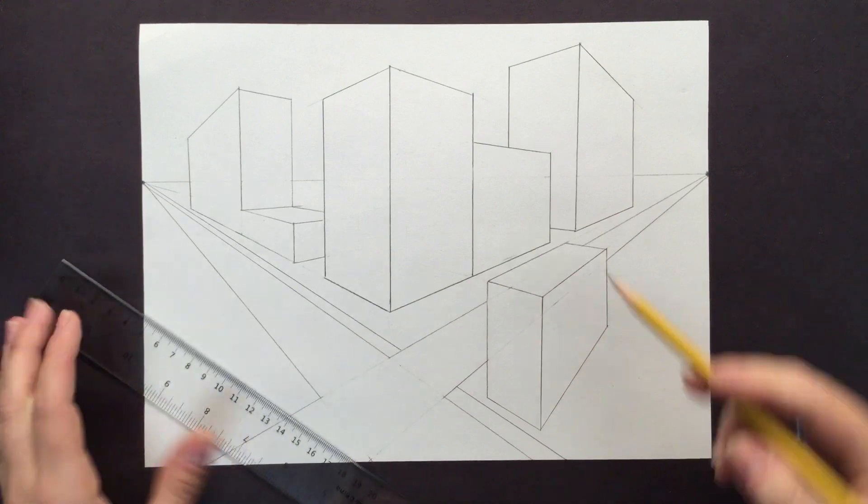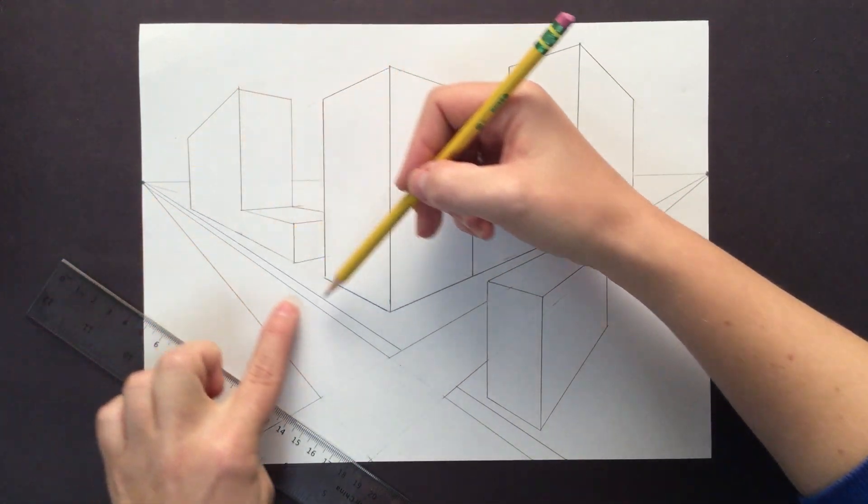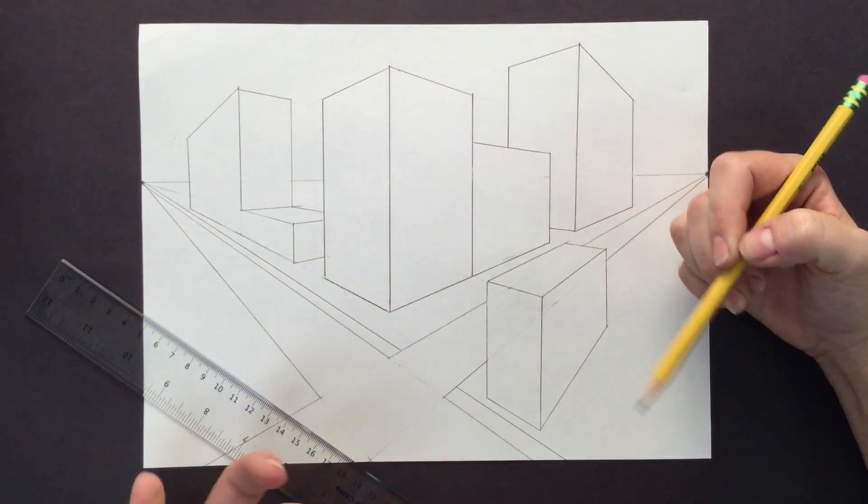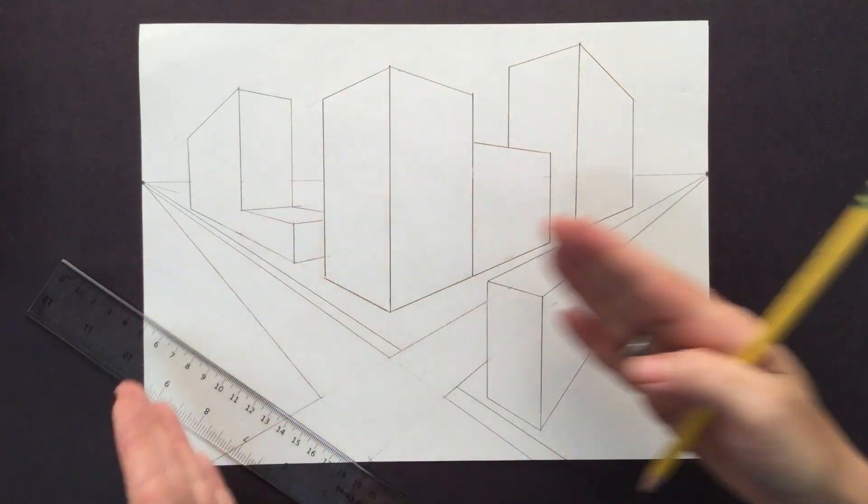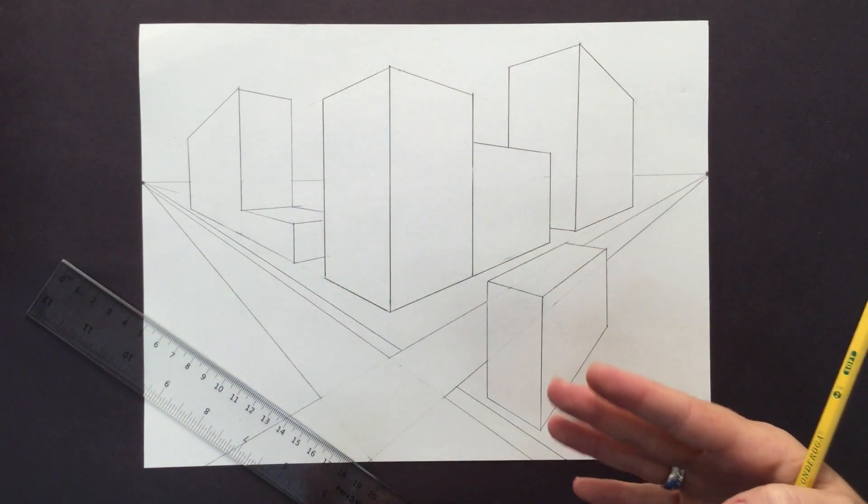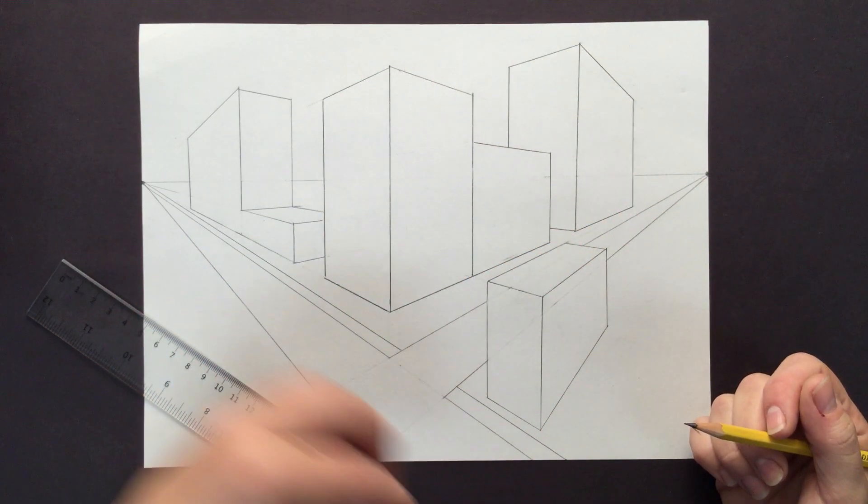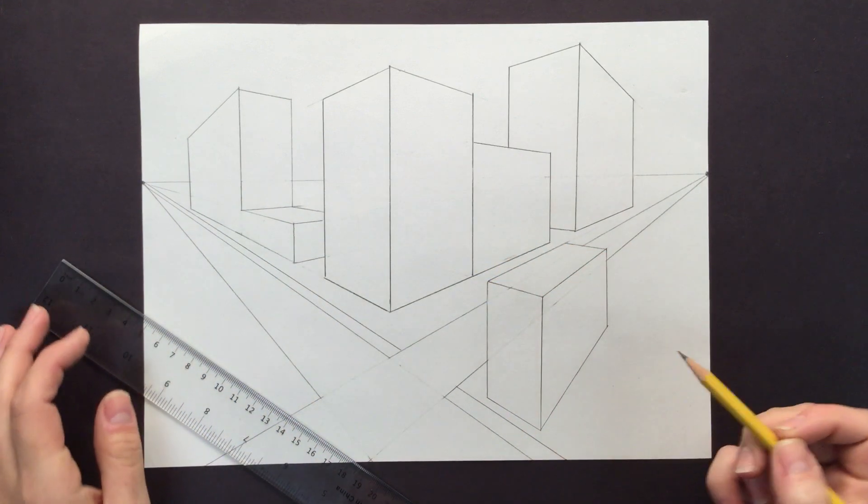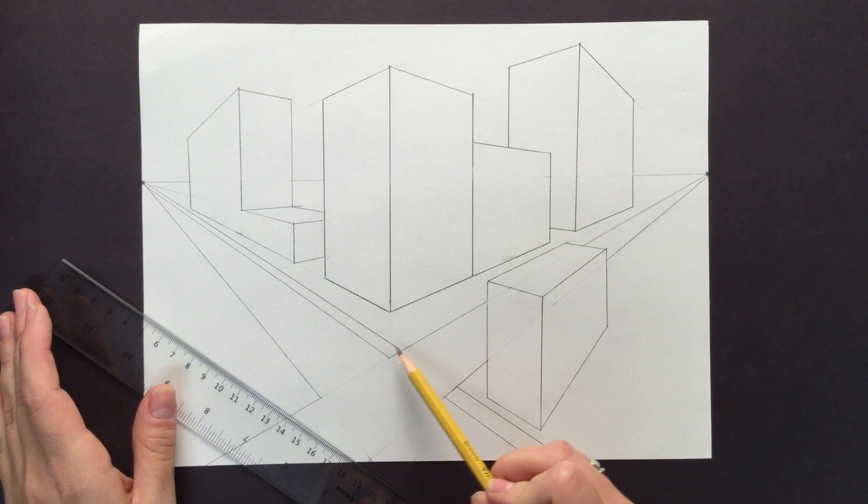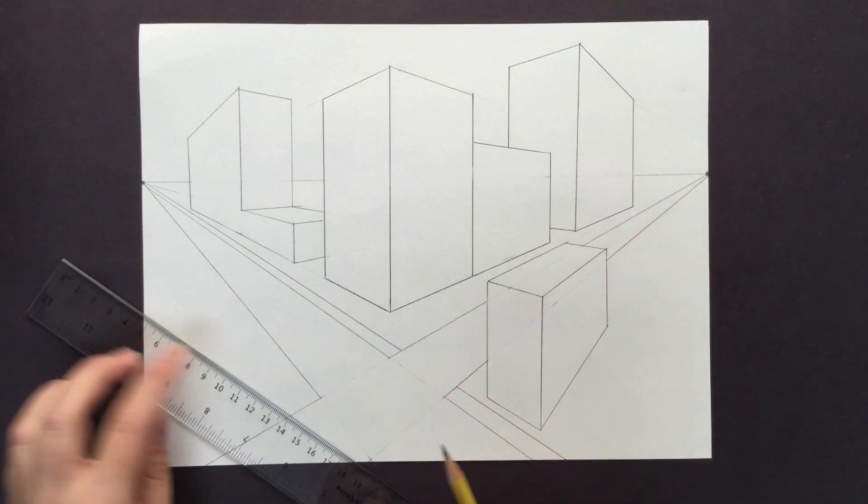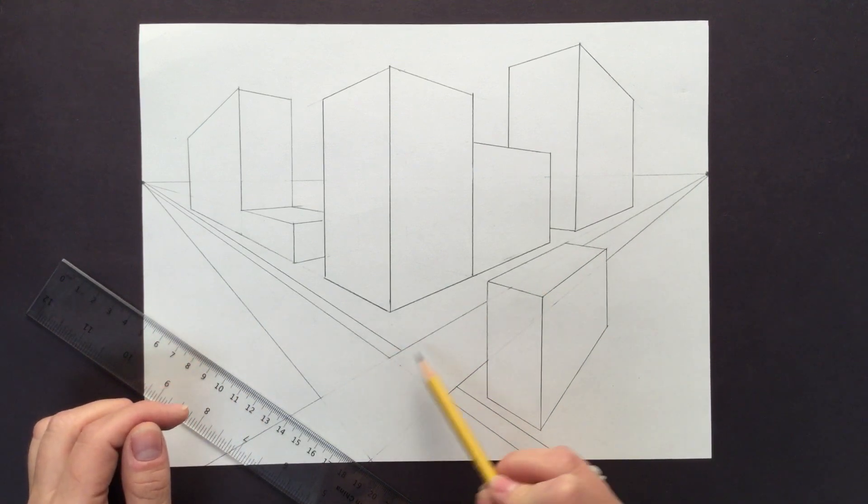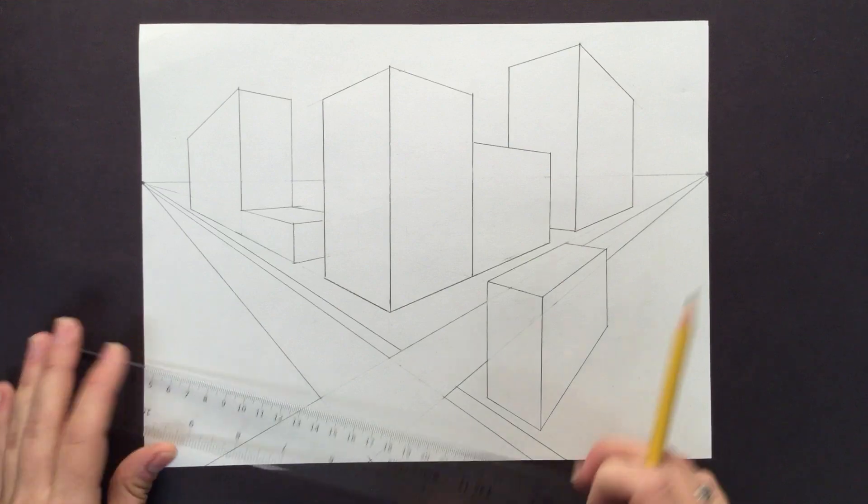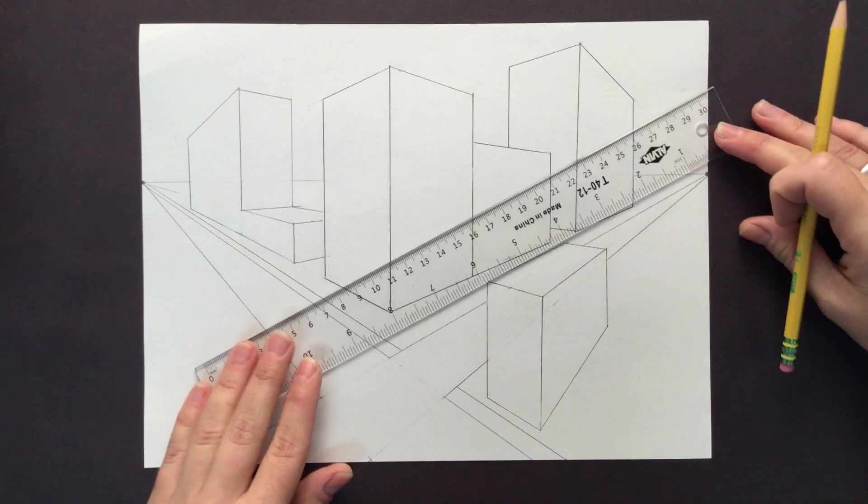And you'll notice here that the sidewalk is looking like it's getting thicker as it comes towards us. Now we know that it's not actually widening as it comes towards the viewer, that's just the optical illusion. As things recede into the distance they look like they're getting smaller. As things come towards us it looks like they're getting wider. I'm going to do the same thing going to the right vanishing point and I want to keep that sidewalk roughly the same width where they intersect here.